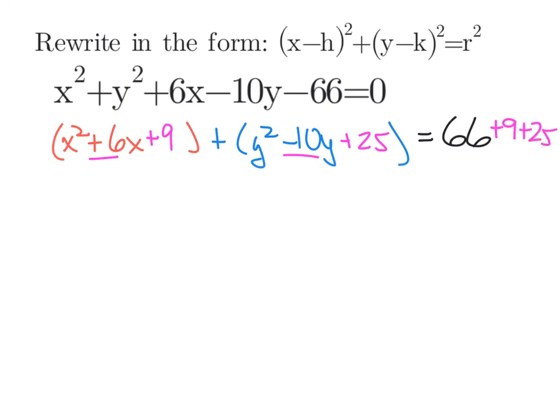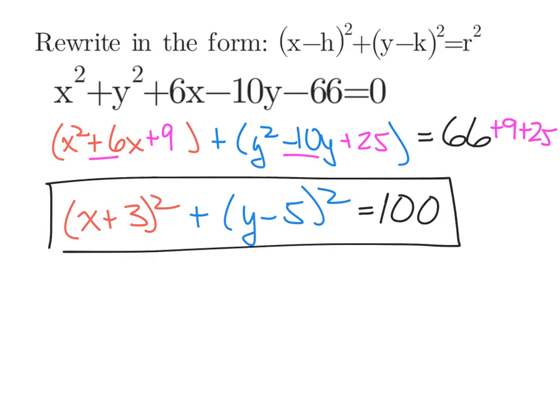All right, now I have some perfect squares on the left side. For these x's, that's going to be x plus 3 squared. And for the y's, it's y minus 5 squared. And adding everything up on the right-hand side, we get 100. Now we have it in the form that we want.